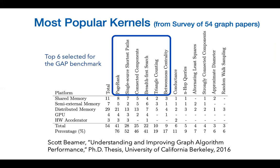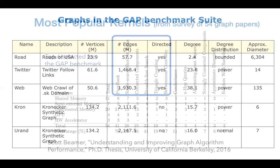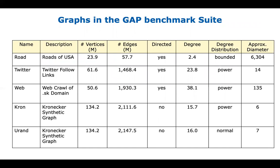The six most common kernels selected were: PageRank, Single Source Shortest Path, Connected Components, Breadth First Search, Triangle Counting, and Betweenness Centrality. Five graphs were chosen to cover the bases in terms of graph features, ranging from 57 million to 2.1 billion edges with different properties. Notably, the road graph is a road network of the U.S. — a small graph but with a diameter of about 6,304 — a real zinger that's hard for almost any framework, by design.